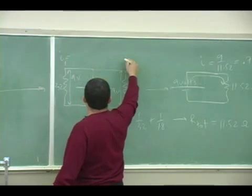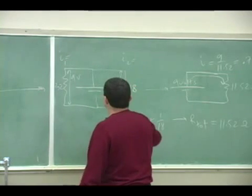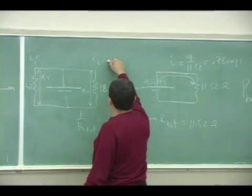Current, we can call that I1 here and then I2 on this side. So this one is going to be 9 over 18, so that's 0.5 amps.